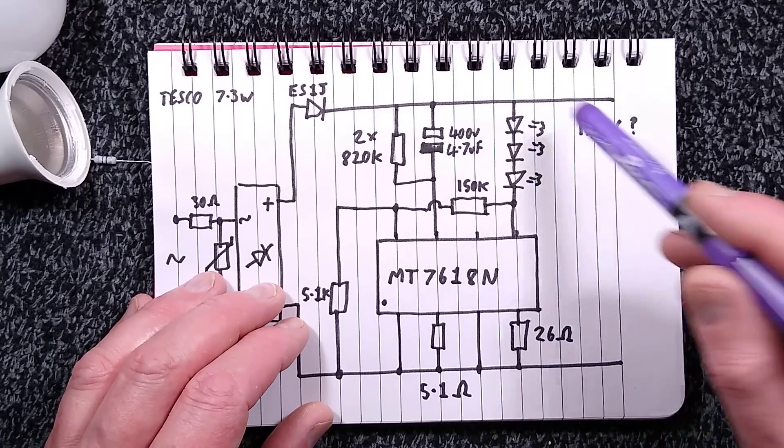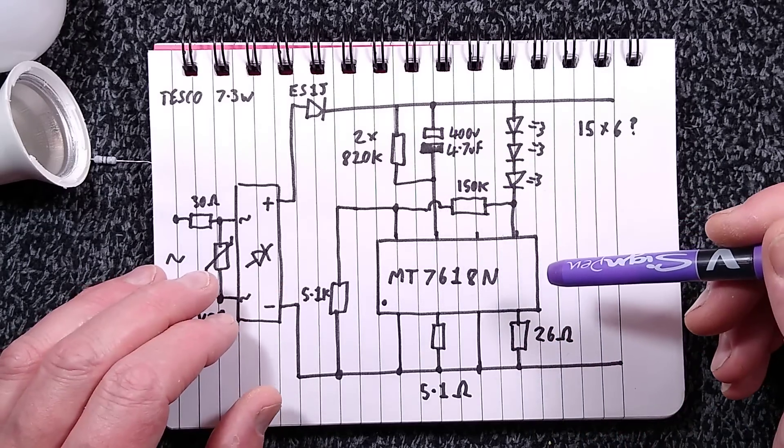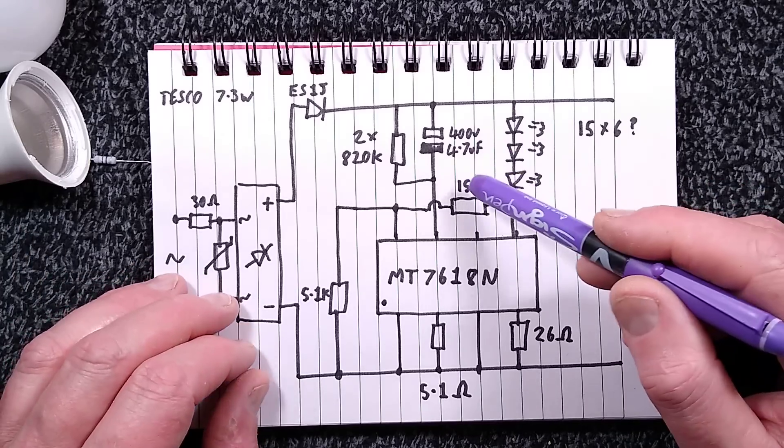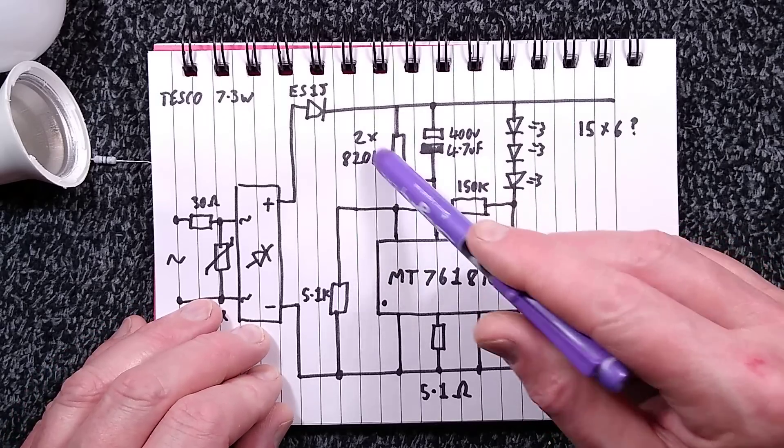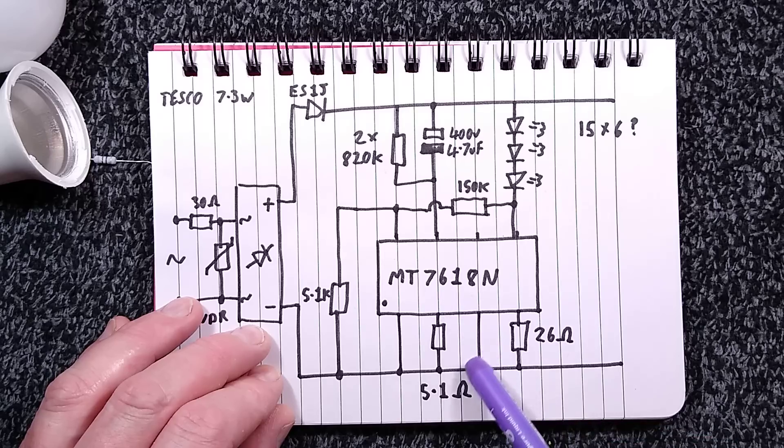But here's the weird bit. There's the electrolytic capacitor that smooths the supply. It's 400 volts, 4.7 microfarad death beam capacitor. And it's got its two discharge resistors across it. But it goes to the chip and it has its own current sense resistor.